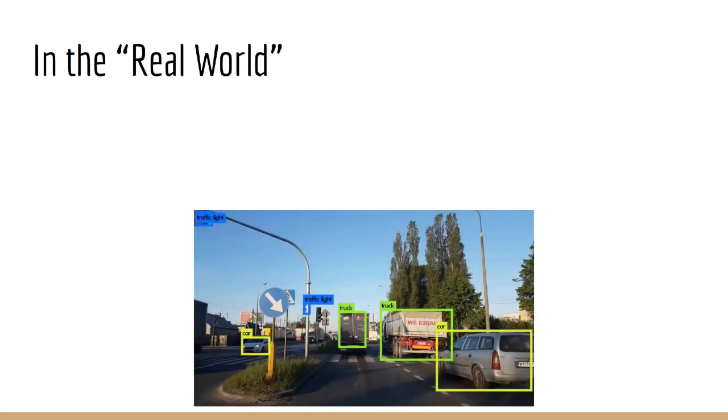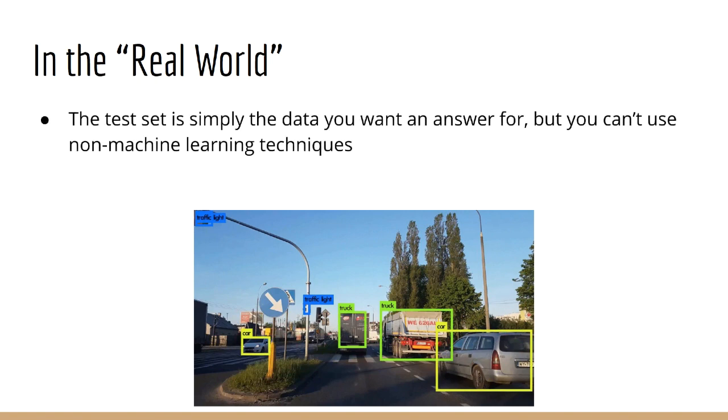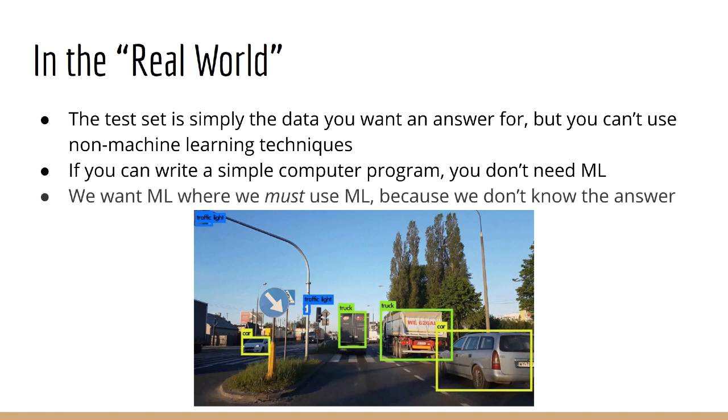Of course, Kaggle is not the real world. In the real world, your test set is the set of data for which you really want the answer, but you can't produce using non-machine learning techniques. If you could just write a basic computer program, or implement a simple set of rules, then you don't need machine learning. So when we are using machine learning, it's because we really do not know the answer, or we can't compute it practically. Some basic examples of this are fraud detection, spam filtering, or object detection. We really want these to work on data that we haven't seen before, but it's clear that we can't do that work manually.